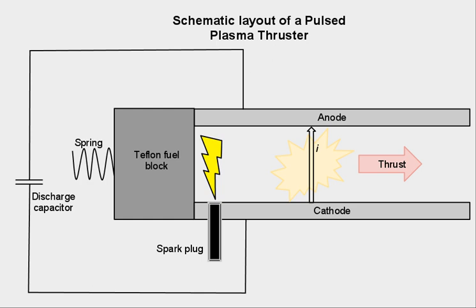The energy used in each pulse is stored in a capacitor. By varying the time between each capacitor discharge, the thrust and power draw of the PPT can be varied, allowing versatile use of the system.